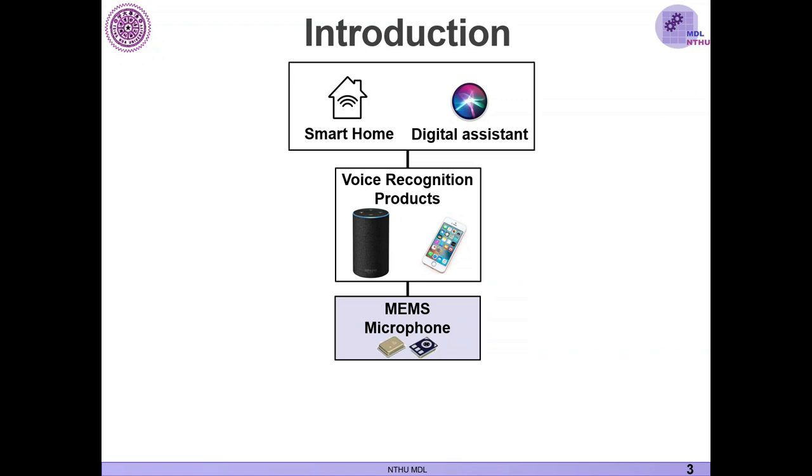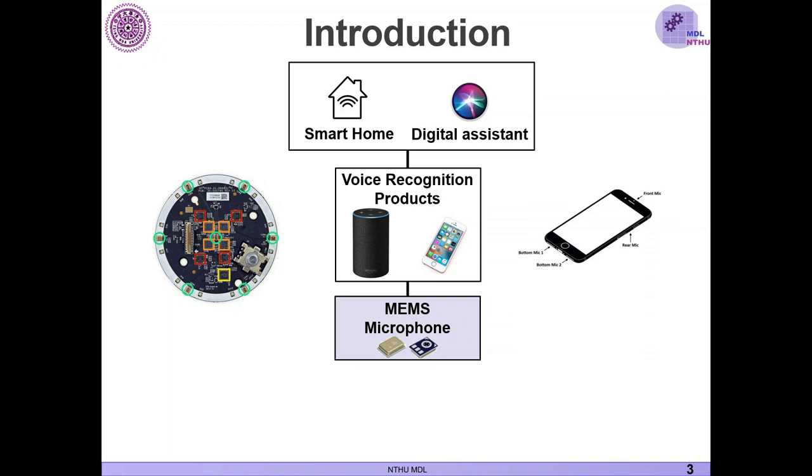For example, on iPhone 7, they use totally four MEMS microphone. And on the Amazon Echo, they use totally up to seven MEMS microphone. However, such solution may have some drawbacks, such as the overall power consumption of the microphone would increase. And also, as long as one of the microphone in the array is broken, the entire system may lose its original function.